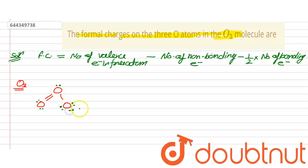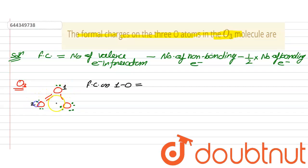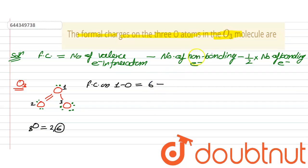Now calculating the formal charge on the first oxygen atom. Oxygen has an atomic number of 8, with the configuration 2, 6 — so the number of valence electrons is 6. The calculation is: 6 minus the number of non-bonding electrons.